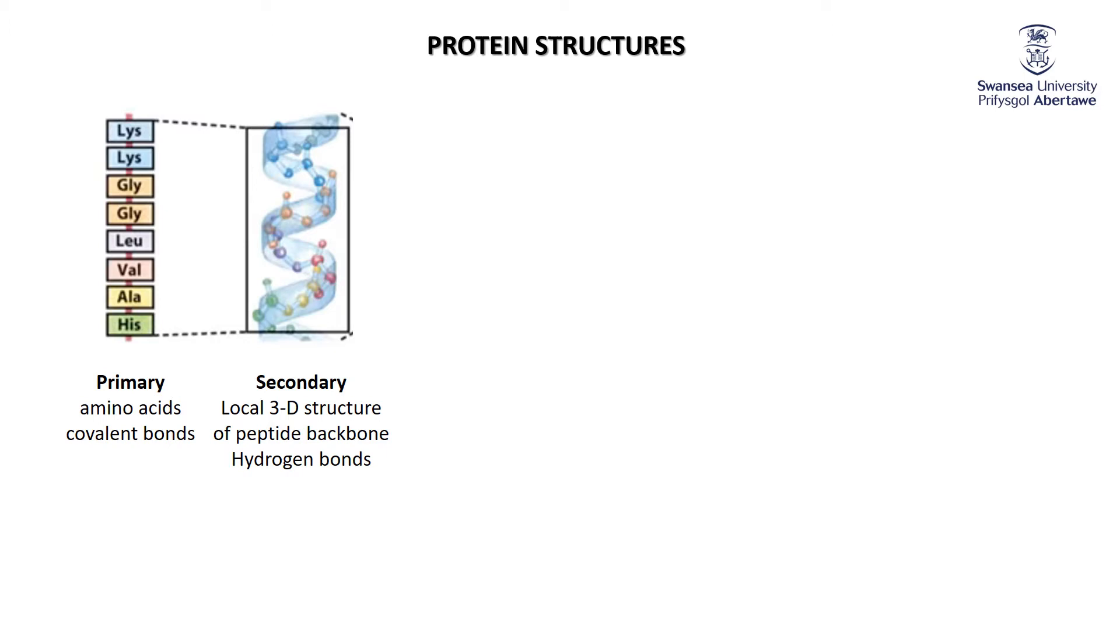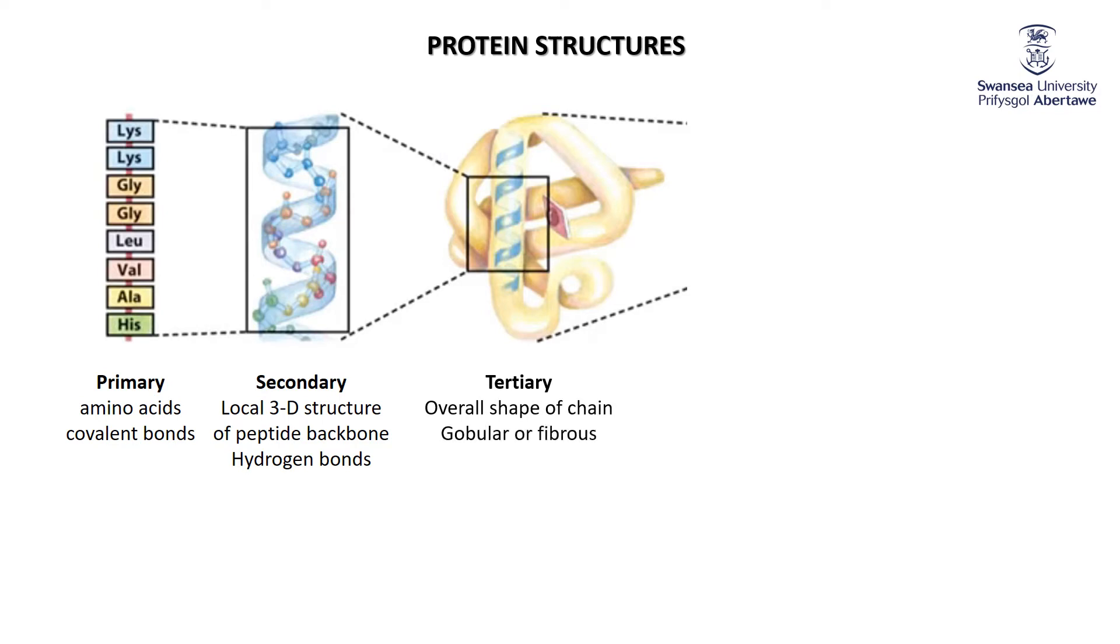And so we describe different bits of the same protein in terms of the local 3D secondary structure. We've had primary, secondary, next one's going to be the tertiary structure and the tertiary structure is effectively the whole protein. What is the overall shape of this big peptide chain as it goes through?